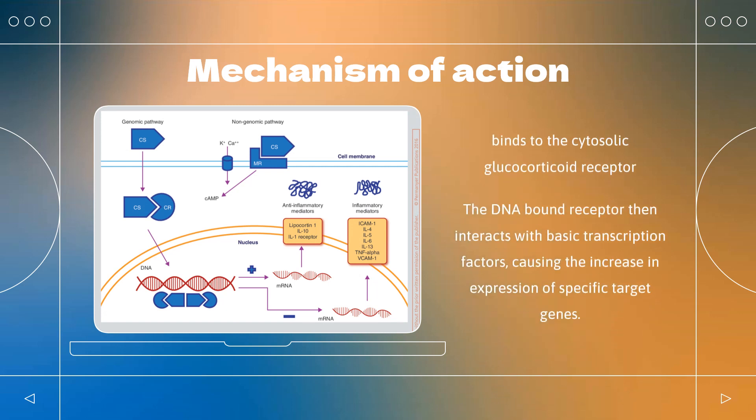Mechanism of action: Fluocinonide is a potent glucocorticoid steroid used topically as an anti-inflammatory agent for the treatment of skin disorders such as eczema. Fluocinonide binds to the cytosolic glucocorticoid receptor. After binding the receptor, the newly formed receptor-ligand complex translocates into the cell nucleus, where it binds to many glucocorticoid response elements (GRE).